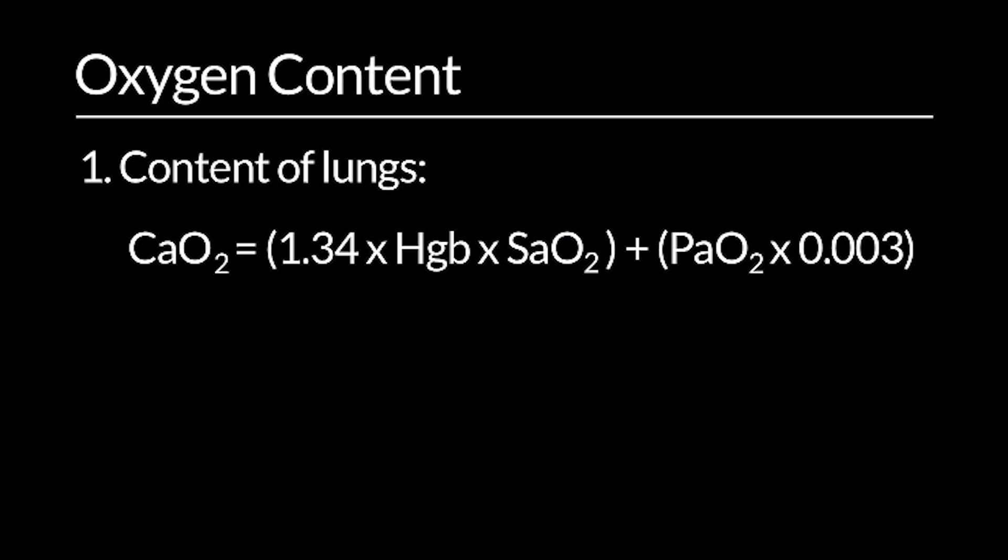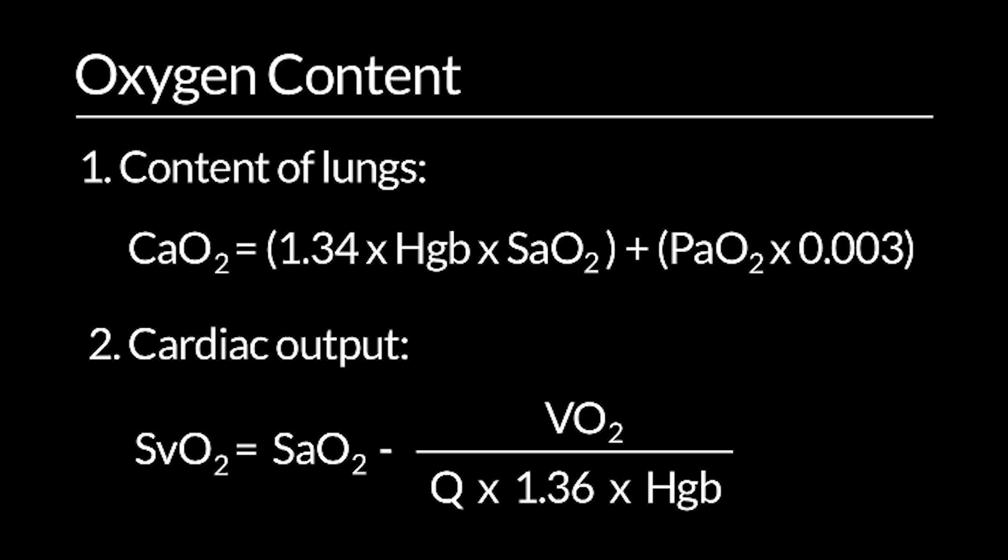The other factor is the amount of blood flow into the capillary bed, which is roughly speaking cardiac output or systemic blood flow. The greater the amount of systemic blood flow, or the higher the O2 content, all other things being equal in terms of O2 consumption, the higher the systemic venous O2 content — also referred to as mixed venous saturation.